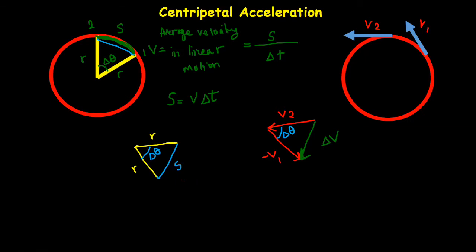So for this triangle, I can write S divided by R is similar to ΔV divided by V. Because V2 equals V1, I write it here. V2 equals V1 equals V. Because as we said, it's uniform circular motion. So the magnitude of V is constant. And I substitute S with V ΔT. So I write it down.